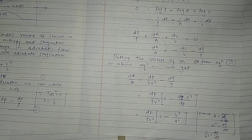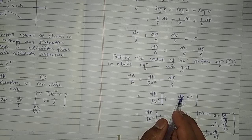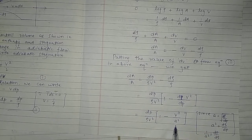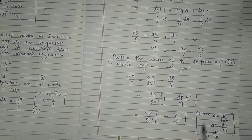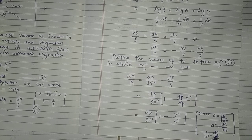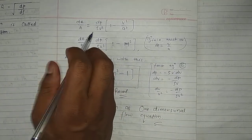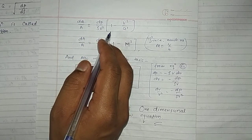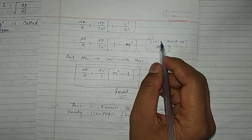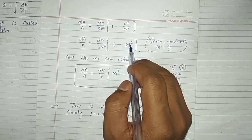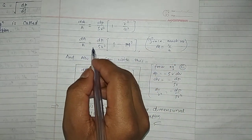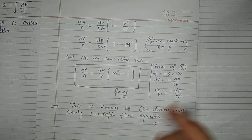We know that the speed of sound a squared equals dp upon d-rho, so d-rho upon dp equals 1 upon a squared. Substituting, dA upon A equals dP upon (rho·V²) into (1 minus V² upon a²). Since Mach number M equals V upon a, we get V² upon a² equals M², so dA upon A equals dP upon (rho·V²) into (1 minus M²).